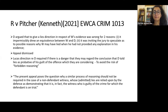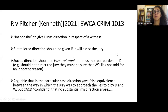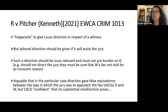The appeal was dismissed. The court held that Lucas directions are given where there's a danger the jury might regard the conclusion that D told lies as probative of his guilt of the offence, to avoid the risk of forbidden reasoning. As the Court of Appeal said, the present appeal poses the question: why should a similar process of reasoning not be required in the case of a non-defendant witness whose admitted lies are relied upon by the defence as demonstrating that it is in fact the witness who is guilty of the crime for which the defendant is on trial?